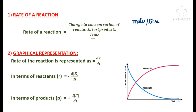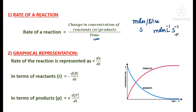What is the unit for time? It is seconds. Since time is in the denominator, when it comes to the numerator we write it with a negative exponent. So the unit for rate of reaction is mol·L⁻¹·s⁻¹. This is the unit for rate of a reaction for a normal reaction.